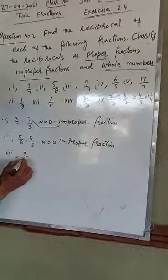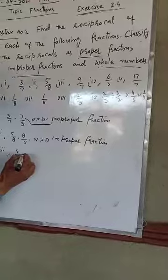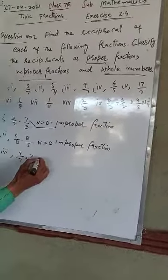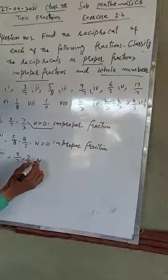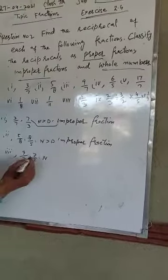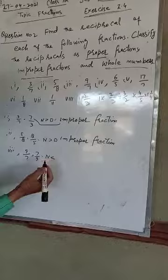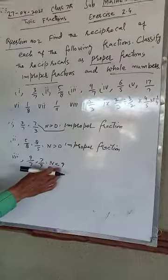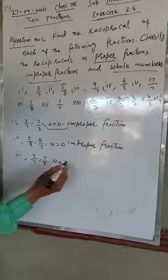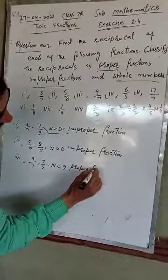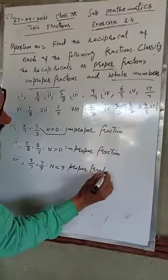Ab part number three par jayenge. Fraction 9 by 7 hai. Iska reciprocal 7 by 9 hai. This numerator is less than the denominator, so the fraction is a proper fraction.